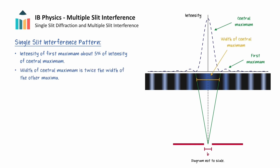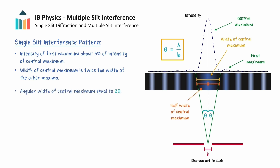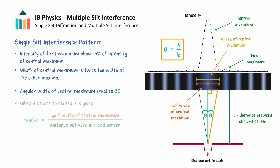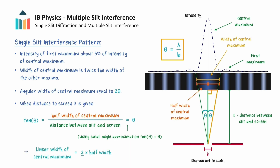In addition, the width of the central maximum is about twice the width of the other maxima. To calculate this width, the equation theta equals lambda over b gives the angle to the first minimum in radians, which is half the angular width of the central maximum, so we multiply theta by 2 to get the full angular width. Furthermore, if the distance between the slit and the screen, capital D, is known, we can calculate the linear width. Using a right-angle triangle and the small angle approximation tan theta equals theta, the full linear width of the central maximum is 2 theta multiplied by the distance D.